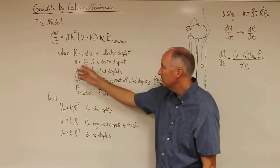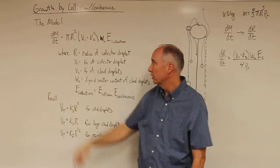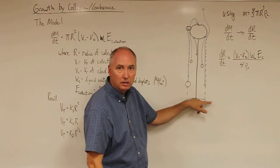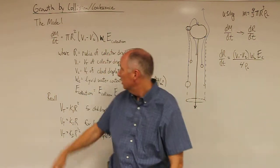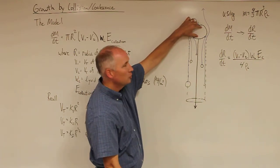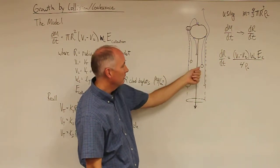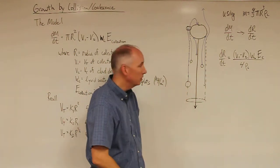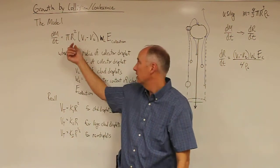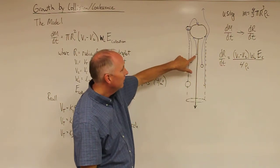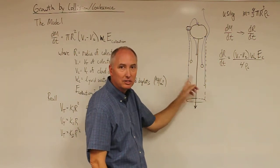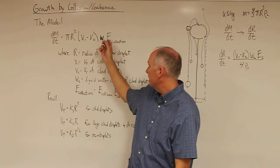This is a straightforward model. It uses the cross-sectional area pi r squared of the falling droplet sweeping out a volume. The large droplet has a greater fall speed than the smaller cloud droplets, all moving downward, and it overtakes them at a rate equal to the difference in fall speeds. The liquid water content defines the total mass of water available in a given volume of cloud droplets being collected, and then we have the collection efficiency.